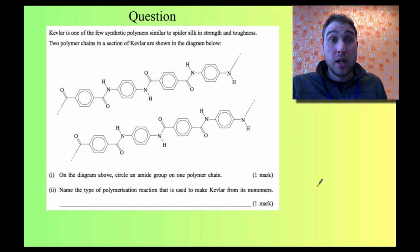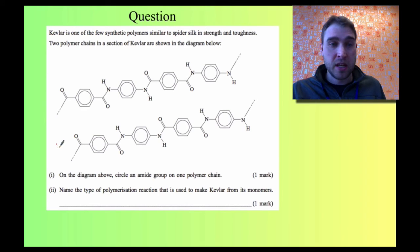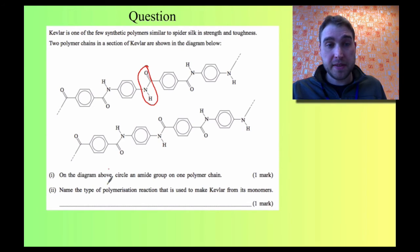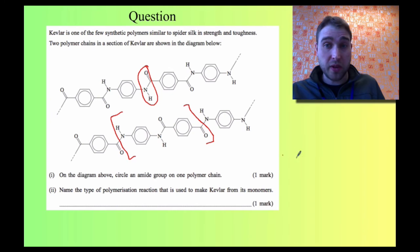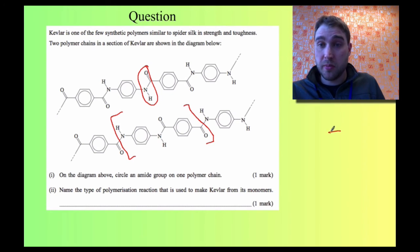The next question talks about Kevlar. We're given a diagram of Kevlar and it says: circle an amide group. To find an amide group — C double bond O to NH — here we have an example amide group. It also says name the type of polymerization. To make this easier, I'm going to circle the repeating unit using brackets, and then draw what the monomers would look like. We've got a benzene ring in both of them.